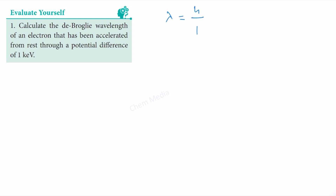h is the Planck constant and p is the momentum, and therefore this is equal to h divided by mv. We know the value of Planck constant, that is equal to 6.626 times 10 to the power minus 34 joule second, and the mass of the electron is 9.1 times 10 to the power minus 31 kg.